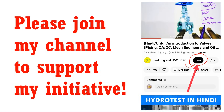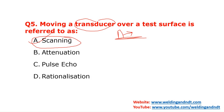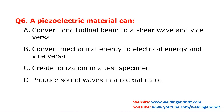Question number five: moving a transducer over a test surface is referred to as scanning. The transducer is the probe. You move the probe on the test surface in order to scan the job and detect defects. This action of moving the probe on the surface is called scanning.